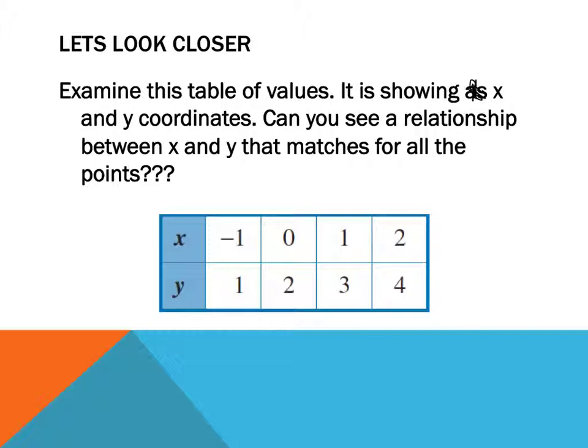Let's have a look at this table of values. I've just done a really simple one. It's showing the x and y coordinates. Can you see a relationship between x and y that matches for all the points? When x is 0, let's start with the positive numbers. When x is 0, y is 2.